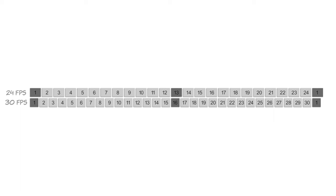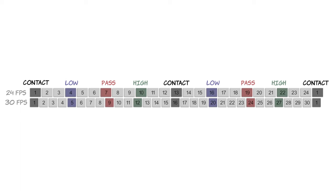As we proceed, as we block in the passing position, it'll be seven on 24. If you want to work on 30, it'll be nine. So you might want to take a screen capture of this image or write down the notes.